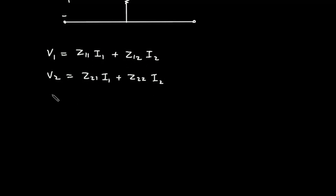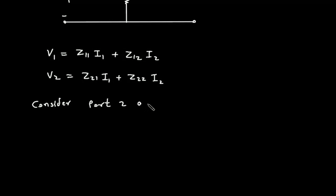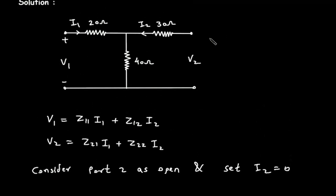To find z11, we consider port 2 as open-circuited and set I2 equal to 0. If we set I2 equal to 0, when we open-circuit this terminal, this will be positive and this will be negative. We will consider this voltage V1 only, then this current I2 will be equal to 0.